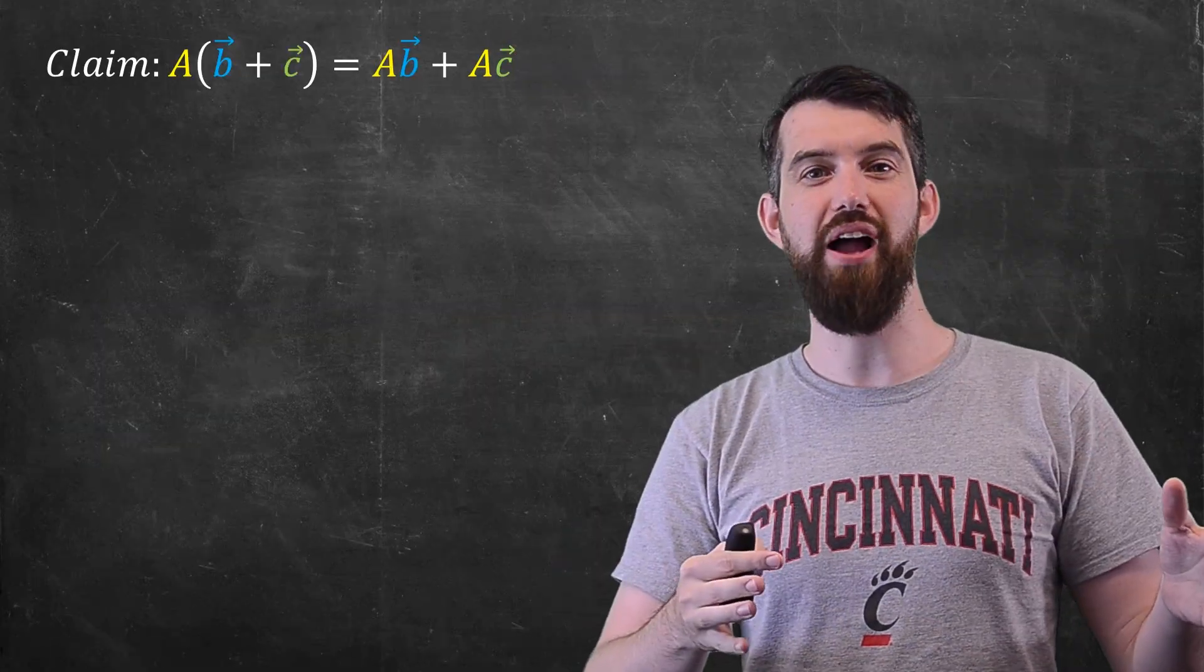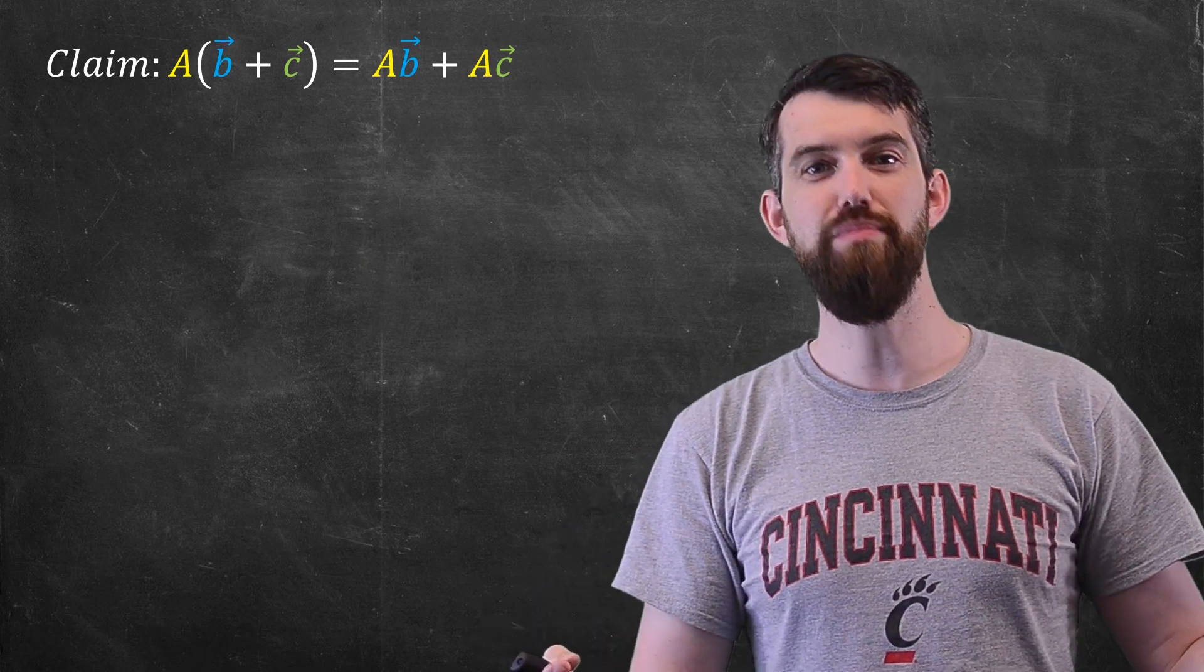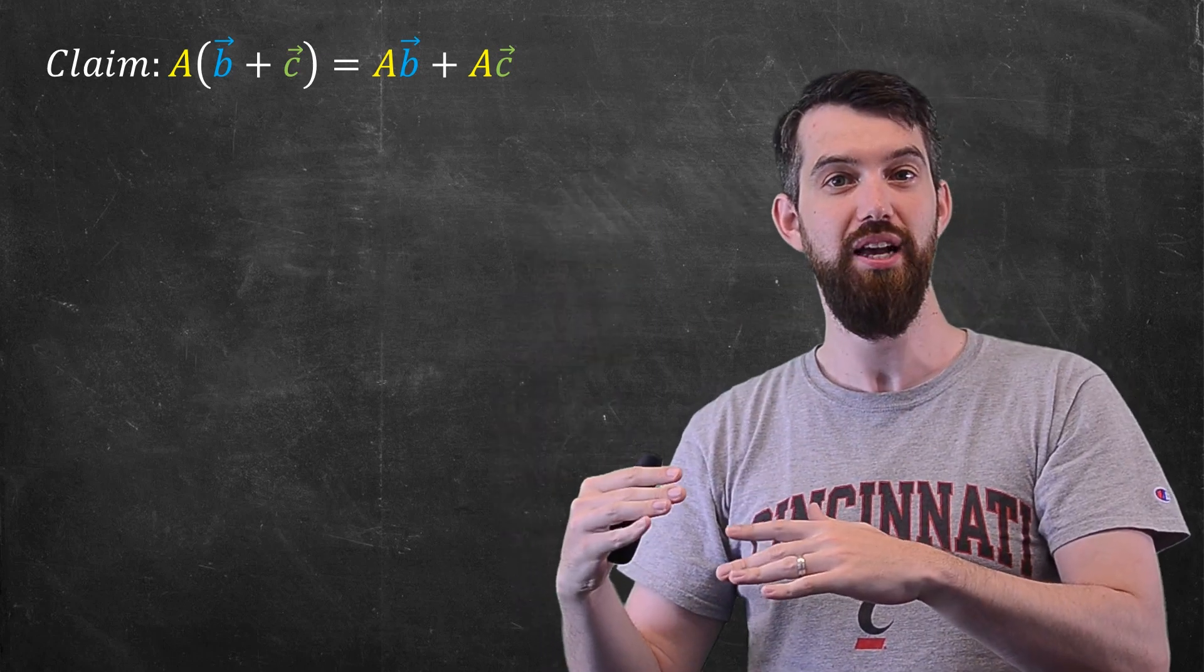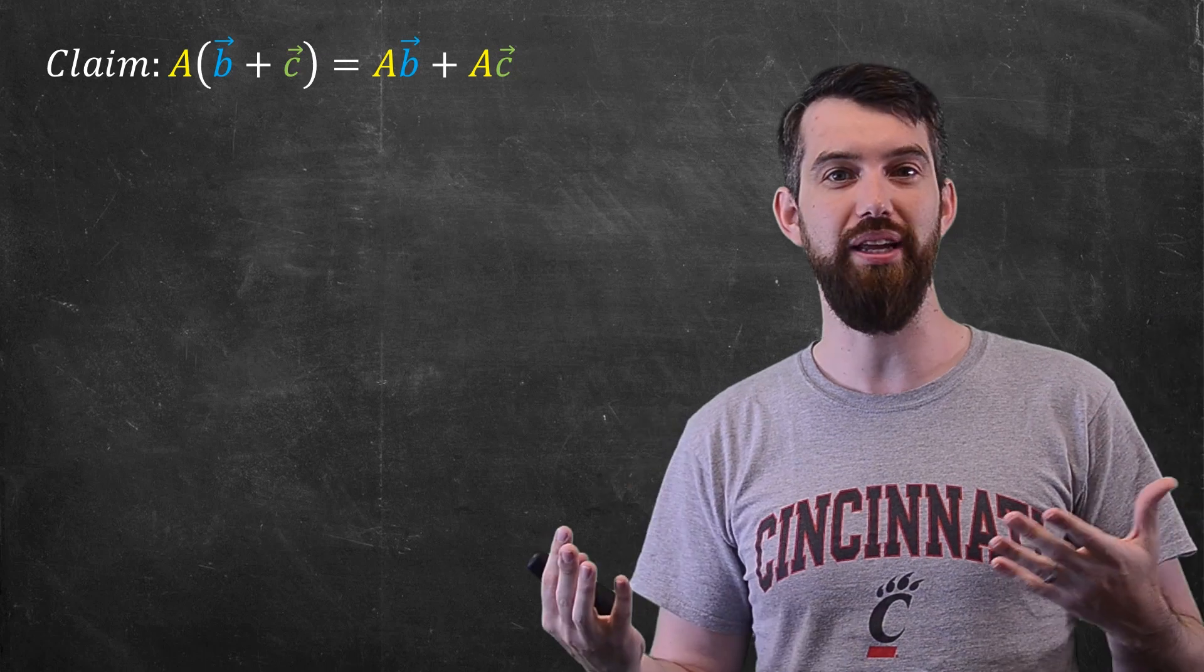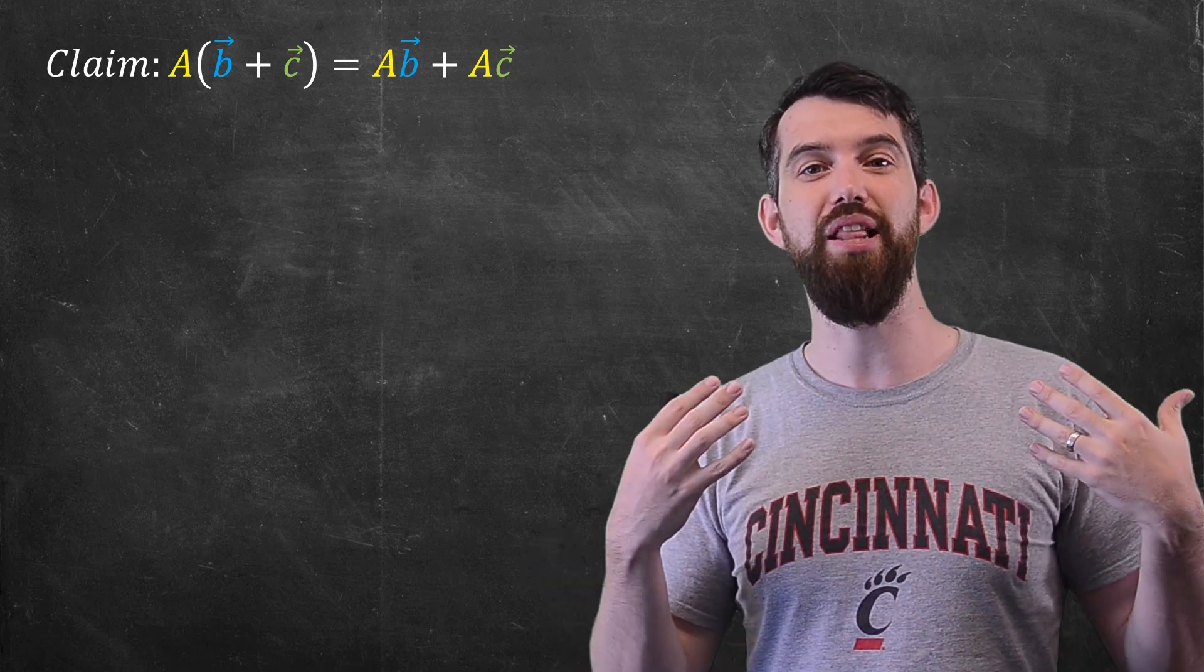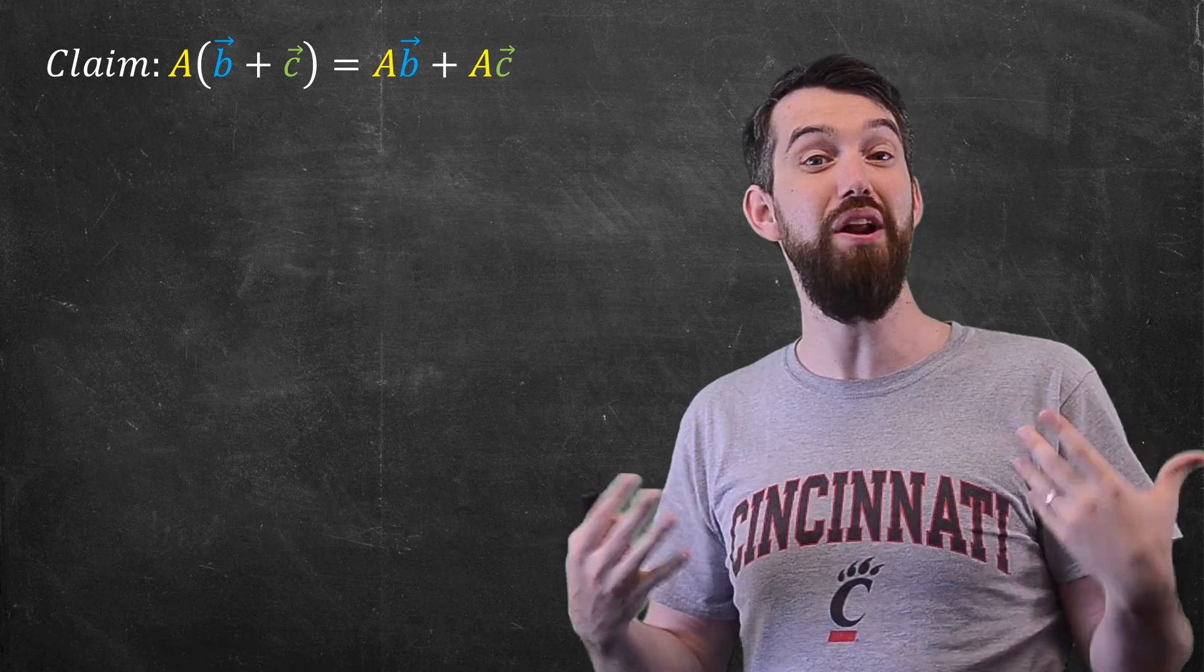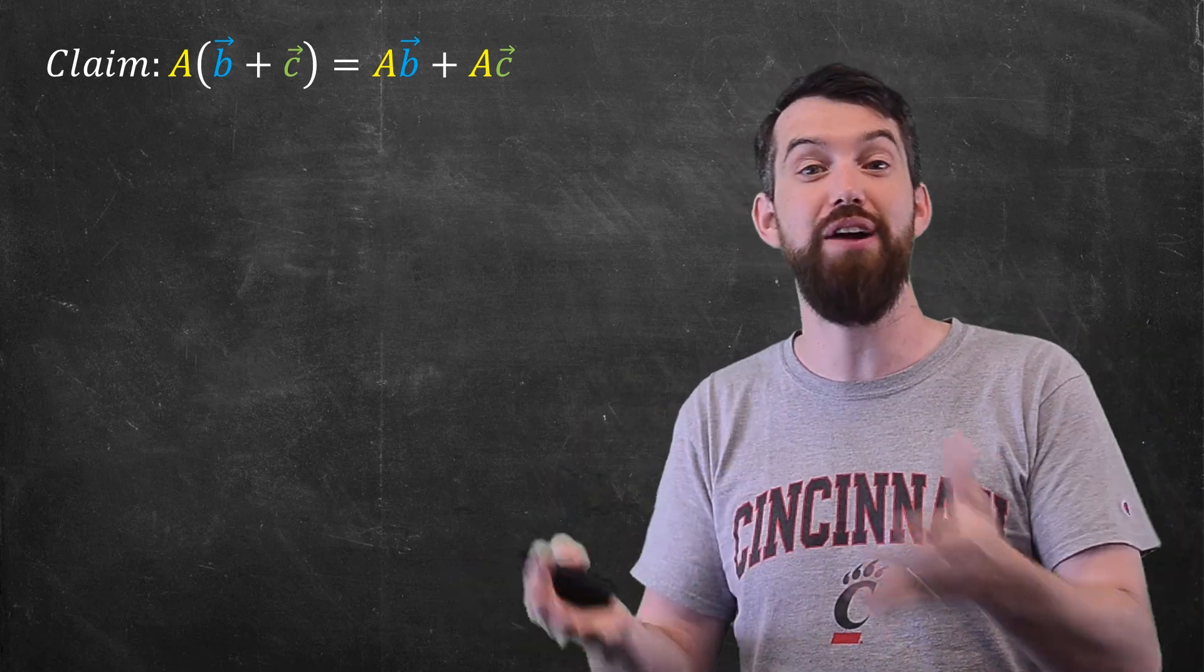Every time in mathematics that we define some new kind of algebraic operation, we should go through and prove a list of different algebraic rules that this new algebraic operation satisfies. For example, in linear algebra, when we're studying the matrix vector product, we want to then go and investigate what kind of rules does this matrix vector product obey?